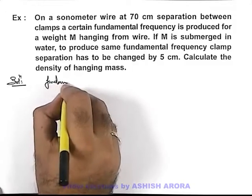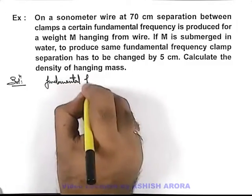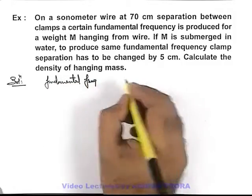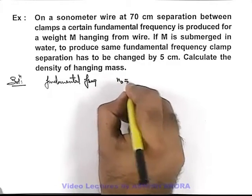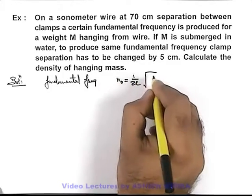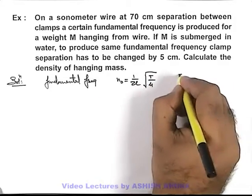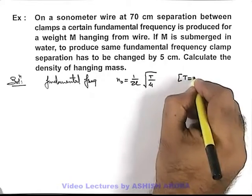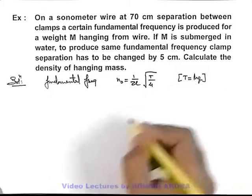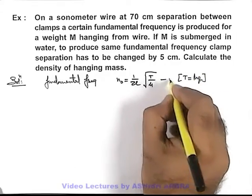In this situation, we know that fundamental frequency of a wire between two supports can be given as n₀ = 1/(2l)√(T/μ), where tension can be written as the weight of the hanging mass, so T = mg. This is our equation 1.